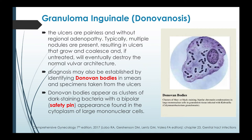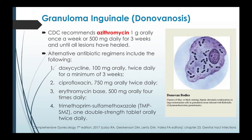The ulcers are painless and without regional adenopathy. Typically multiple nodules are present, resulting in ulcers that grow and coalesce, and if untreated will eventually destroy the normal vulvar architecture. Diagnosis may be established by identifying Donovan bodies in smears and specimens taken from the ulcers. Donovan bodies appear as clusters of dark-staining bacteria with a bipolar or safety-pin appearance found in the cytoplasm of large mononuclear cells. The CDC recommends azithromycin 1 gram orally once a week or 500 milligrams daily for three weeks until all lesions have healed. Alternative antibiotic regimens include doxycycline, ciprofloxacin, erythromycin base, or trimethoprim-sulfamethoxazole.